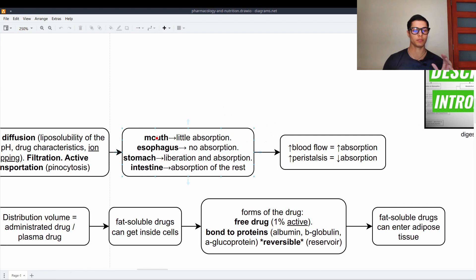A little recap here. Mouth, we have little absorption. In the esophagus, we have no absorption. In the stomach, we have liberation and absorption, mainly liberation. And in the intestine, we have absorption of the rest that has not been absorbed in the stomach. High blood flow equals higher absorption. Higher peristalsis, lower absorption, because there is less time of contact.